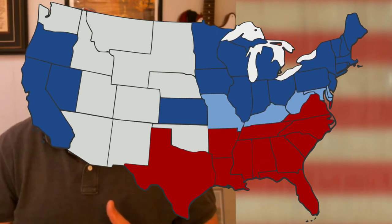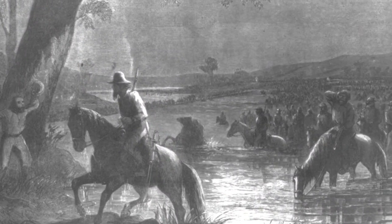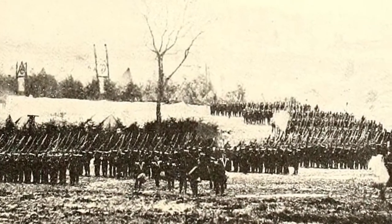In early September of 1862, Lee and his Army of Northern Virginia crossed the Potomac River into Maryland in what became known as the Maryland Campaign. As he crossed, he was being closely followed by General McClellan and the Army of the Potomac. Knowing the Union Army was following, Lee sought to confuse McClellan and split his army into four different groups, sending them off in different directions.